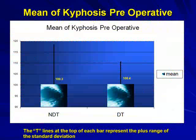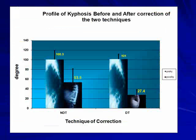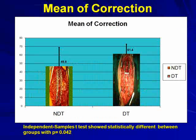The mean preoperative kyphosis, after surgery, was 53 degrees in the shortening group and 28.8 degrees in the distraction group. This is from the distraction procedure. Comparing the profile kyphosis before and after correction in both techniques, the mean correction in the shortening was about 46.8 degrees, and in the distraction it was 61.4 degrees. However, there is no statistically significant correlation between the two methods.